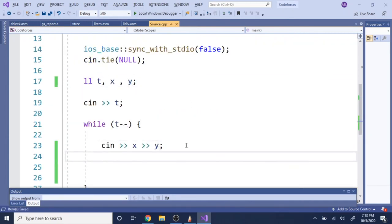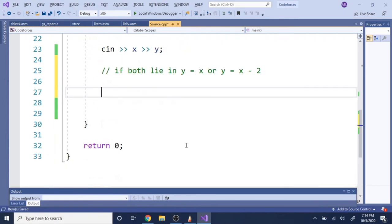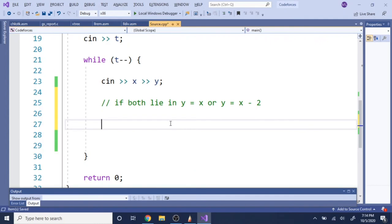So, we need to check if they are, if both lie in y equals x or y equals x minus 2. So, to do that, let's just plug these values into y equals x. So, if y is equal to x, that's going to check the first part of y equal to x.